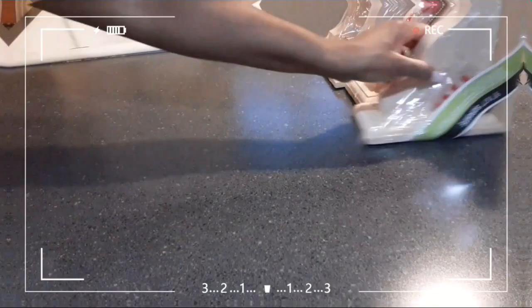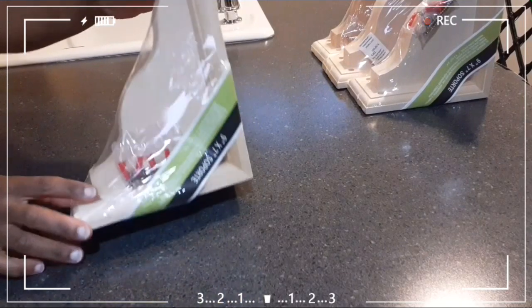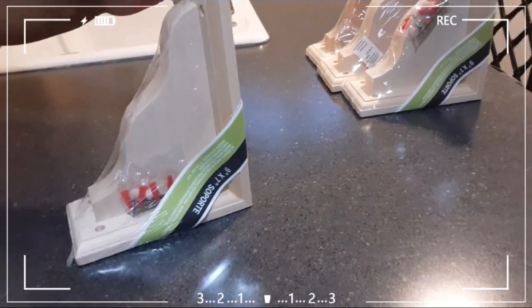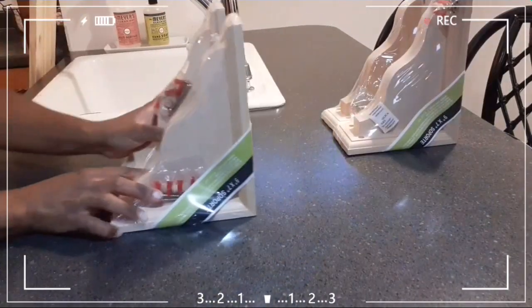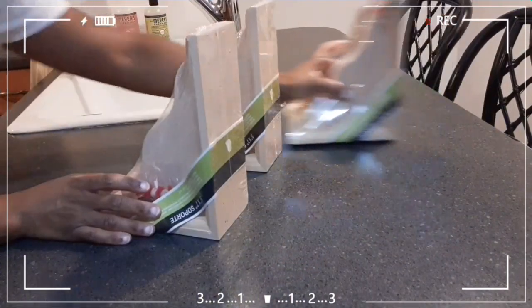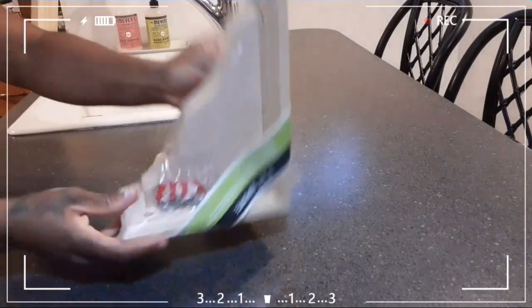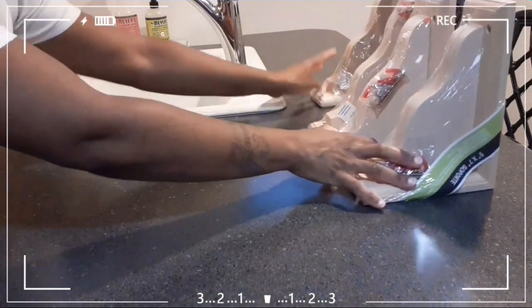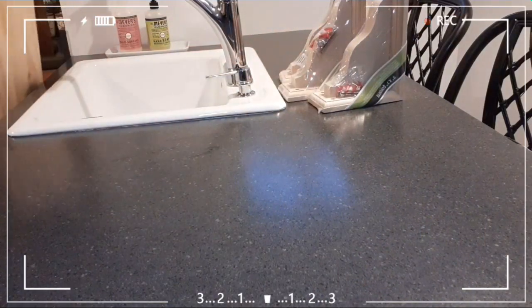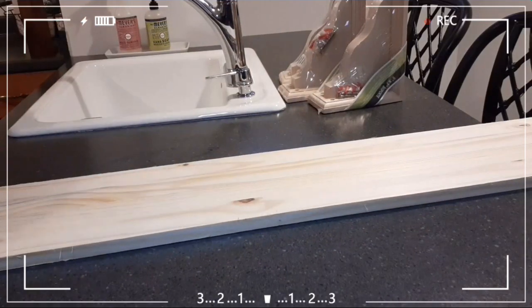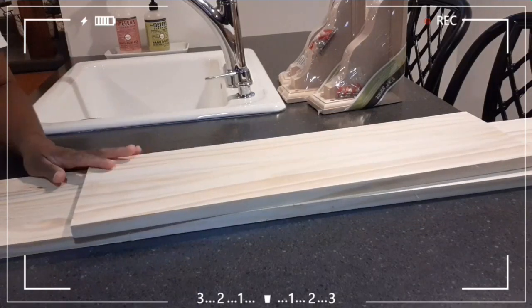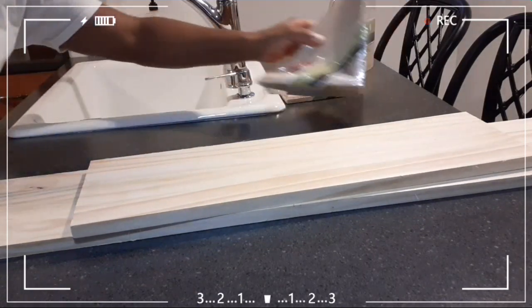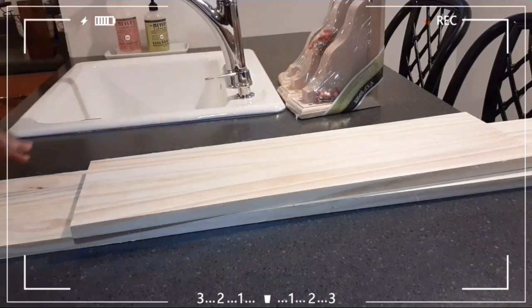So to start off, I got these brackets from Lowe's. They are 9 by 7 and I got four of them. They were $16 a piece. Then I also grabbed two pieces of wood. Both pieces of wood were $8 and they both were 48 inches long. I got one cut down to 24 inches and I just got that cut at Lowe's.